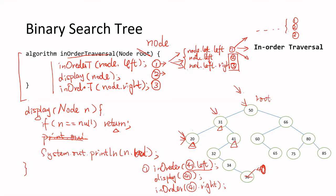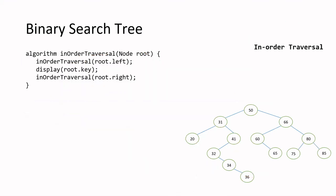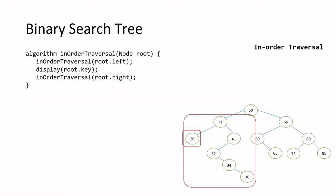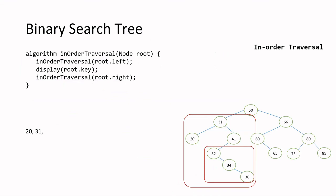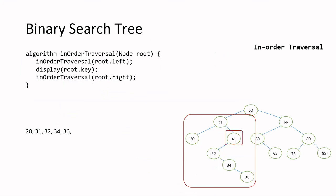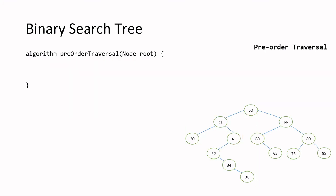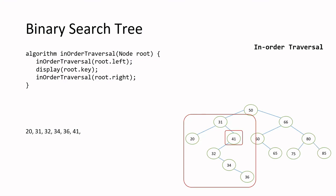To summarize in-order traversal on this tree: you print 20 first, then 31, then move into the right subtree of 31 — starting with its left subtree, printing 32 first, then the right subtree of 32. Once the whole left subtree of 50 is done, you print 50, then traverse its right subtree in the same order.